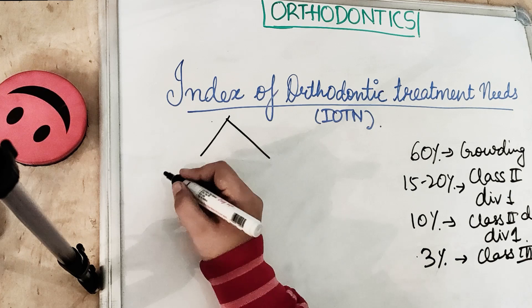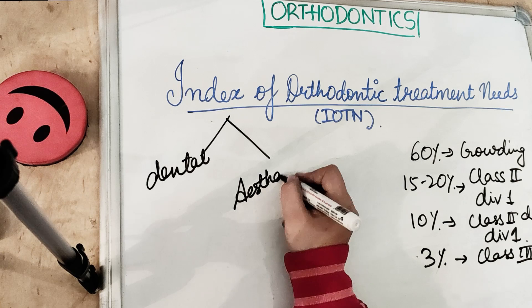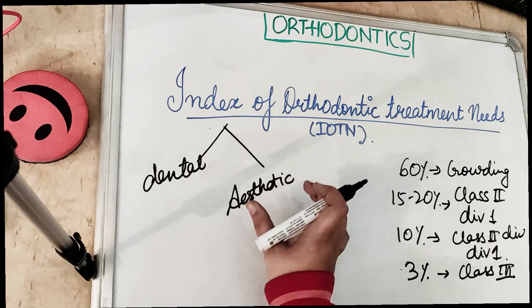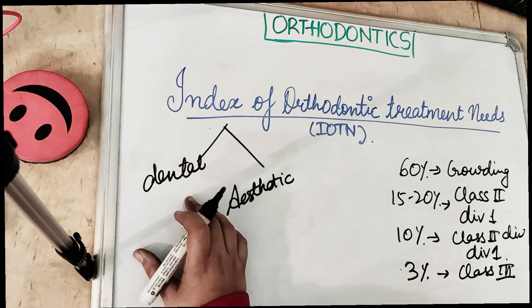The orthodontic treatment need comprises two components: one is the dental health component and the other is the aesthetic component. This index was used by the Sweden Dental Health Board to determine the amount of finances given by the state for orthodontic treatment need. It has five categories for treatment need, ranging from very little to very great.